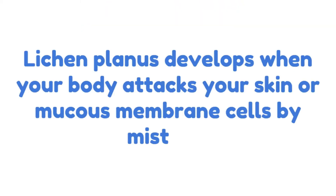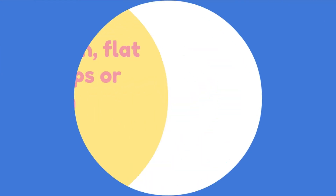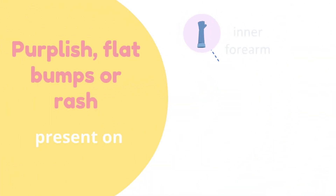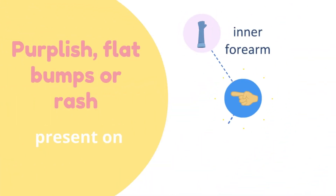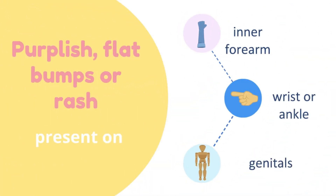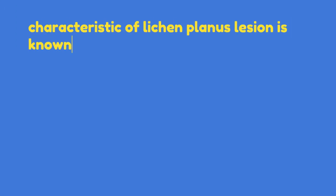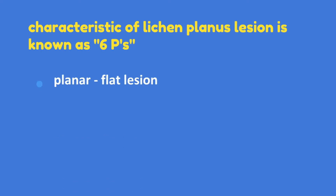Lichen planus happens when our immune system fights cells of the skin or mucous membranes, and it isn't contagious. There are purplish flat bumps or rash, often present on the inner forearm, wrist, or ankle, and sometimes the genitals. The characteristics of a lichen planus lesion are known as the 6Ps.